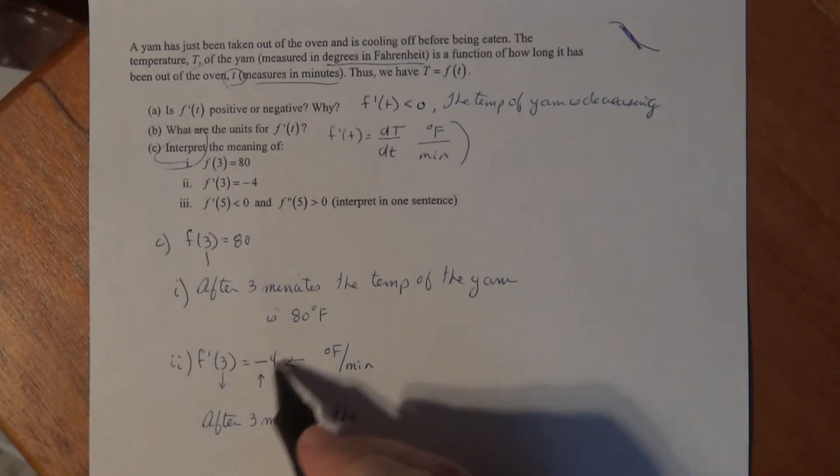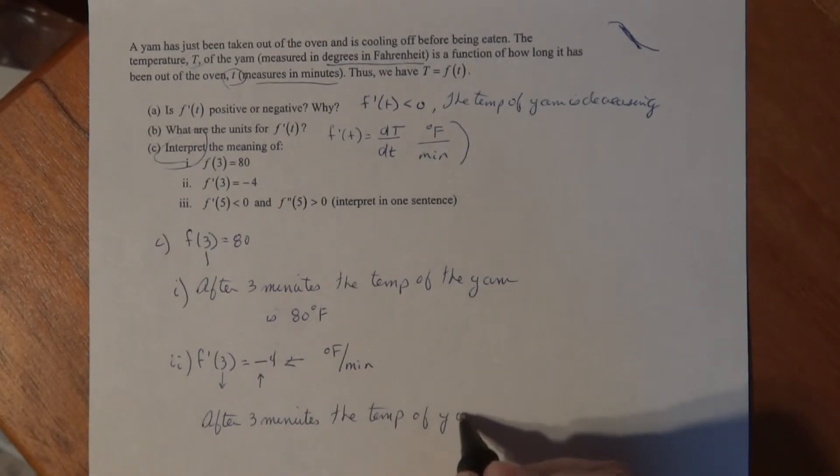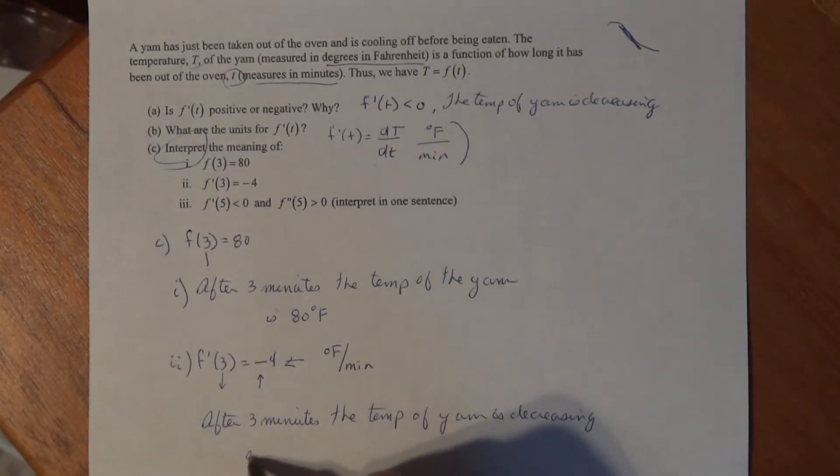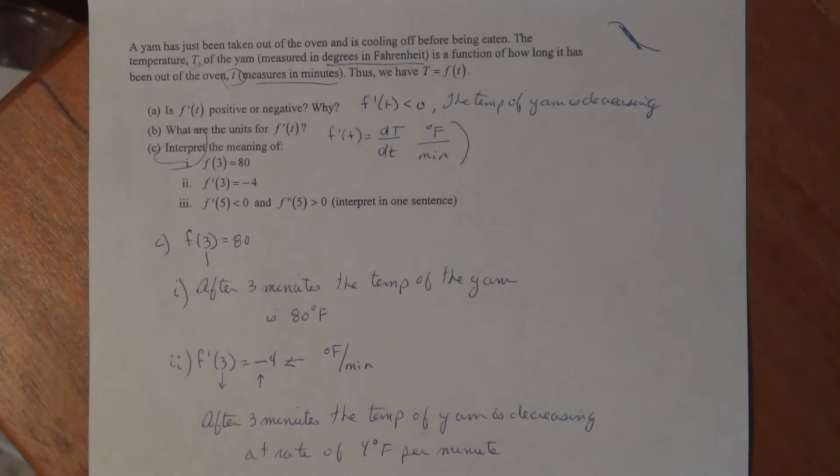because that's telling me about the temperature. The temperature of the yam is decreasing at a rate of 4 degrees Fahrenheit per minute. In other words, at that time, after one minute passes, it'll approximately change 4 degrees.